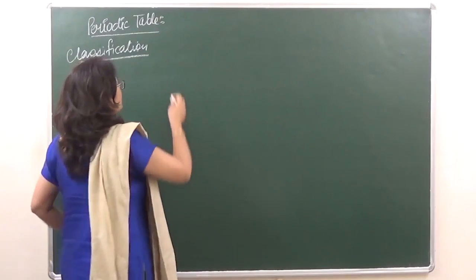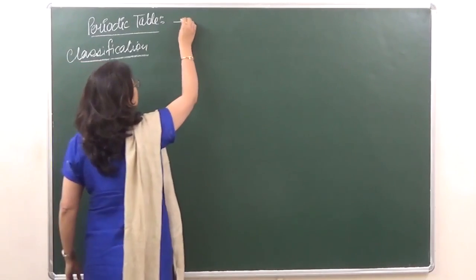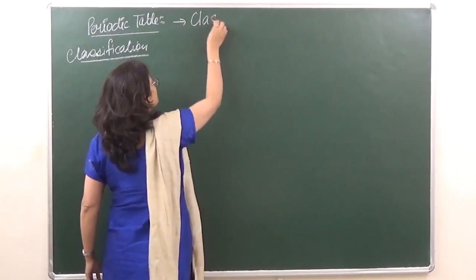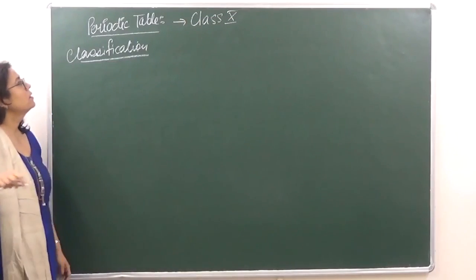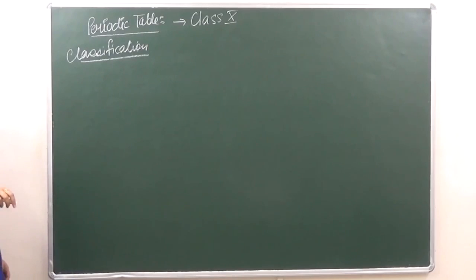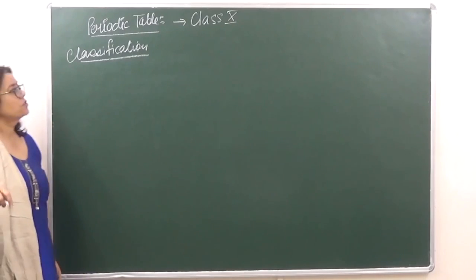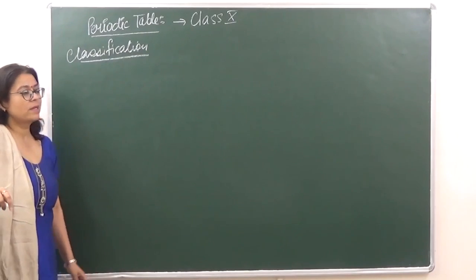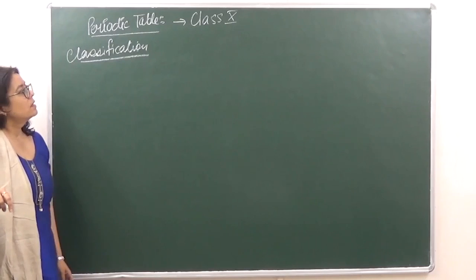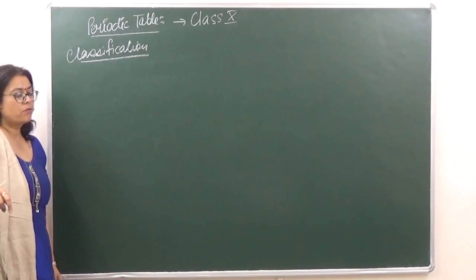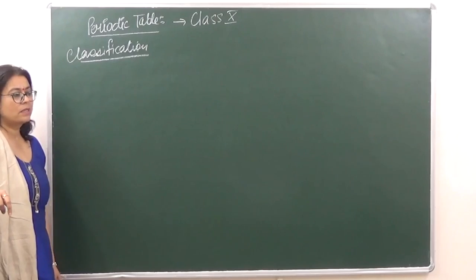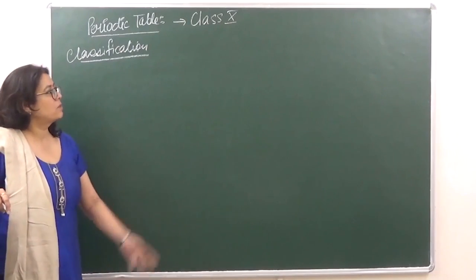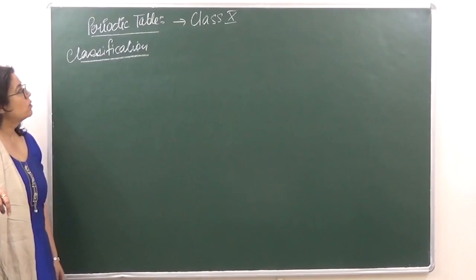Today we will start with the last chapter of class 10, which is periodic table classification. Why last chapter? Because this chapter is very important from a class 11 point of view if you wish to take sciences, and it is an easier chapter than the previous chapter, which is carbon and its compounds.